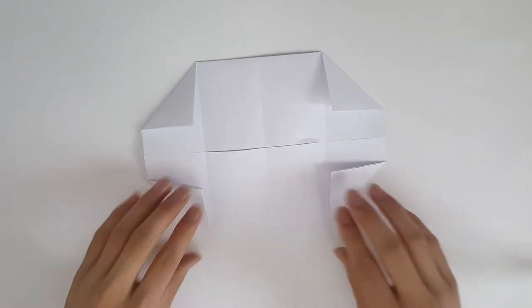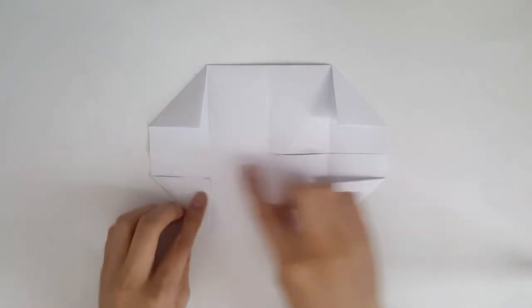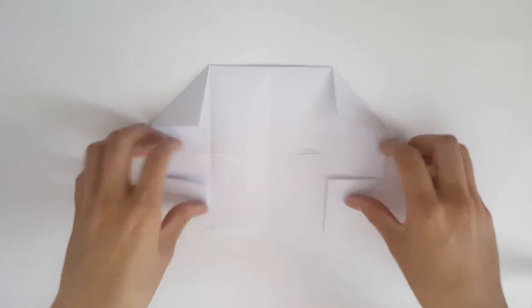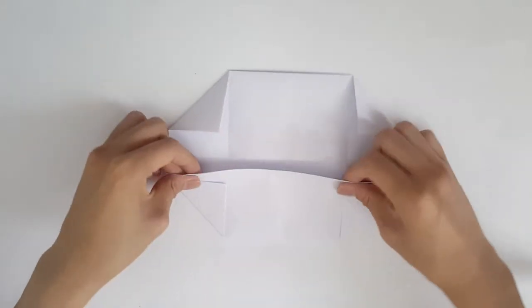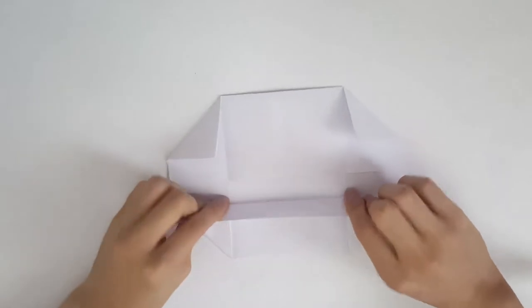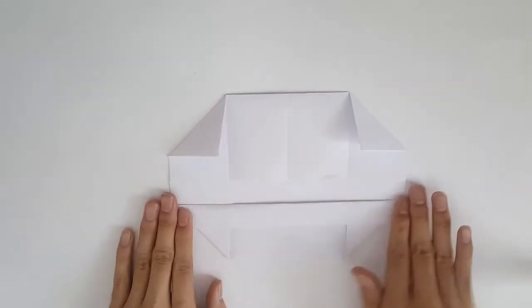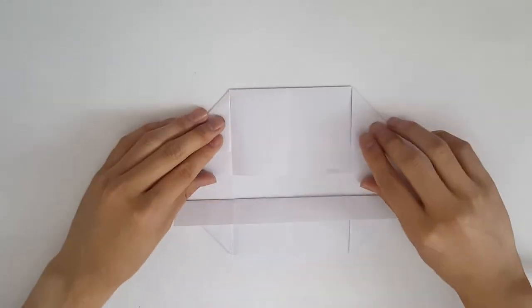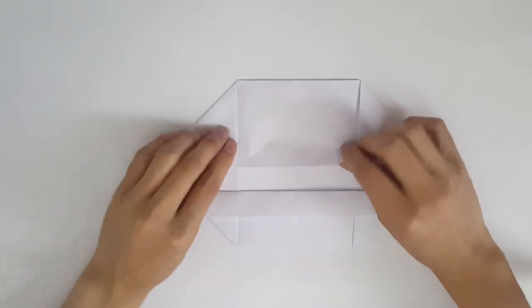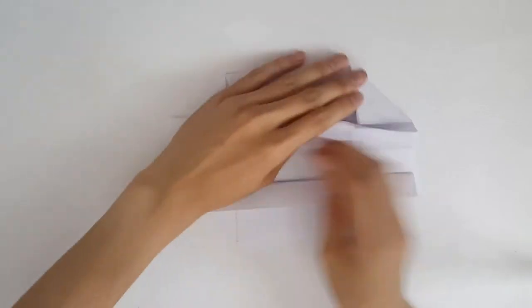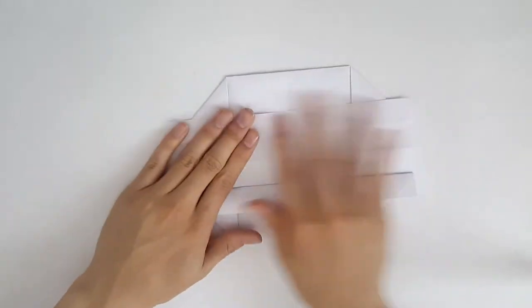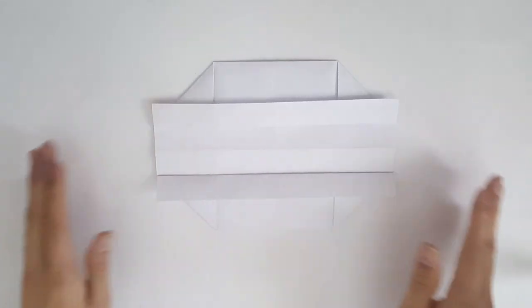Once we've done that, it should look something like this. And now we're going to fold the little piece left. We're just going to make a horizontal fold over the triangles, just like so, and we'll do it the same with the top side as well, just folding it down, and it should look like this.